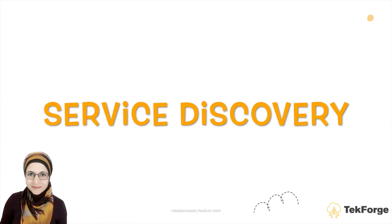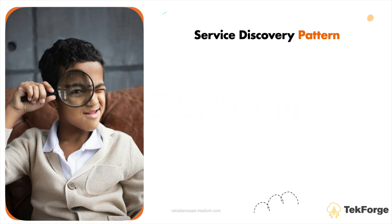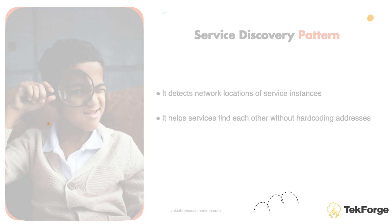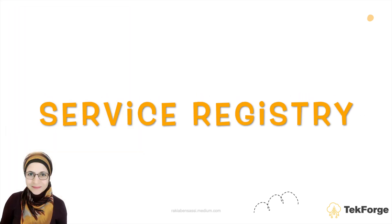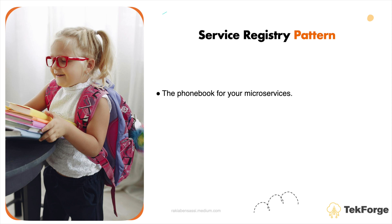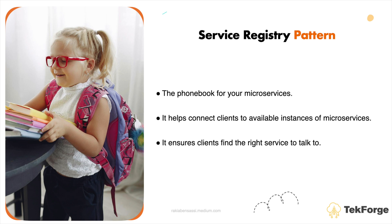Service Discovery: This pattern automatically detects network locations of service instances to enable seamless communication between services. It helps services find each other without hardcoding addresses. Think of the Service Registry as the phone book for your microservices — it helps connect clients to available instances and ensures they always find the right service to talk to.